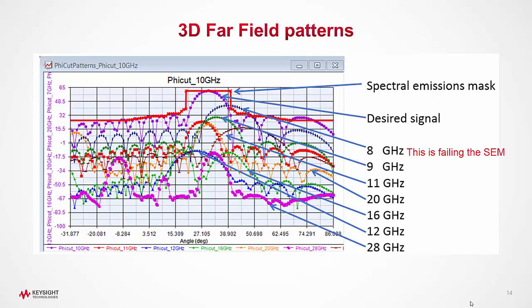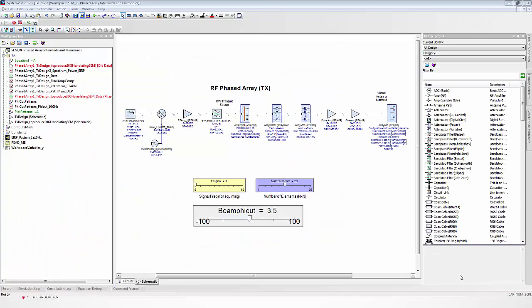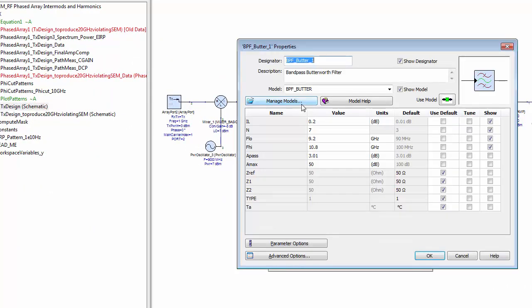There can be several solutions that a designer can come up with. But here we are taking one of the approaches to suppress this product. The filter in the block diagram immediately after the mixer and amplifier is originally designed with a bandwidth of going from 9.2 to 10.8 gigahertz.